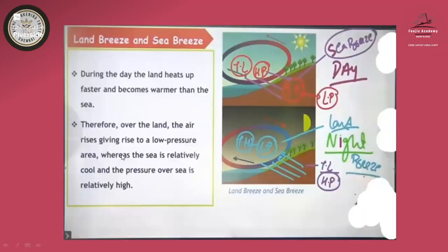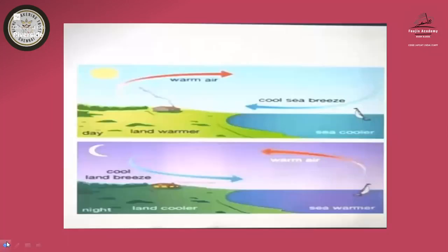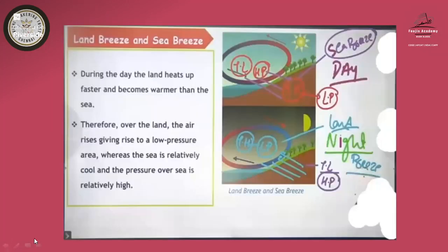Now let us look at the land breeze and sea breeze. All these wind phenomena come down to temperature being inversely proportional to pressure. Here we have water bodies and land bodies. During the daytime, the solid land parts heat up, giving us high temperature and therefore low pressure.